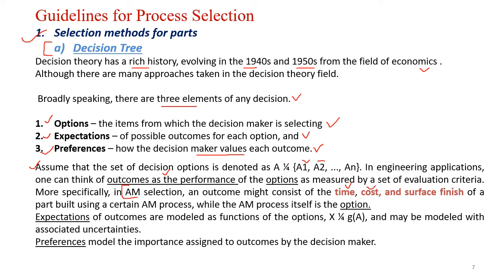More specifically, in our AM context, the outcomes might consist of time of product development, cost involved, and surface finish of the part being built using any of the AM processes — while the AM process itself is the option. Here we can find out the process lines: whether to use the SLA process, FDM process, or SLS. The expectations of the outcomes are modeled with a function — options can be modeled with associated uncertainties if they are not going to complete completely, those uncertainties can also be included.